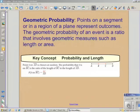Now geometric probability. Points on a segment or in a region of a plane represent outcomes. The geometric probability of an event is a ratio that involves geometric measures such as length or area. Please pause this video while you copy this definition and the key concept.